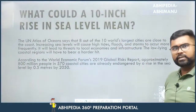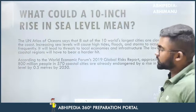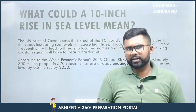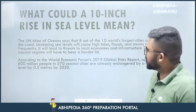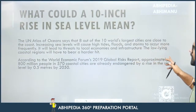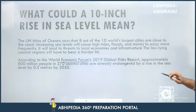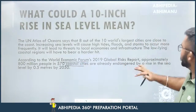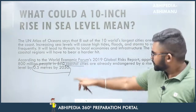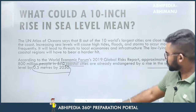Two important data points: The UN Atlas of Oceans states that 8 out of 10 of the world's largest cities are close to the coast. The World Economic Forum's 2019 Global Risk Report states that 800 million people in 570 coastal cities are already endangered by a rise in sea level of 0.5 meters by 2050. Increasing sea levels will cause high tides, floods, and storms more frequently, threatening local economies and infrastructure, with low-lying coastal regions bearing the hardest hit.